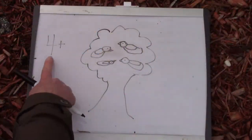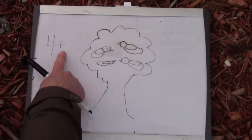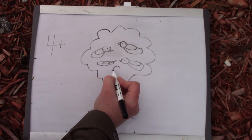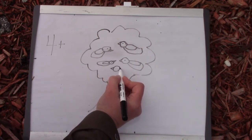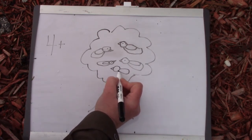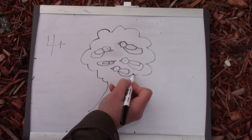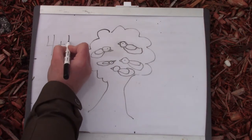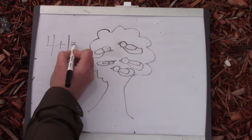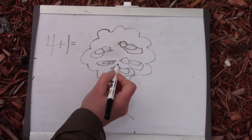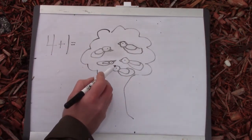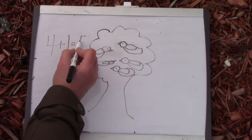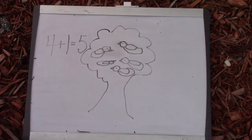Class, I have four birds in my tree and one more came along. Four plus one equals one, two, three, four, five. Five birds.